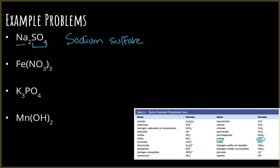The next one has a multiple charge metal, so we have to take into account what the charge is. This is iron. We can uncross the charges or balance them out. This is the polyatomic ion — NO3 is called nitrate and has a negative one charge. If there are three of those, that means the iron has to be plus three. So this is iron(III) nitrate.